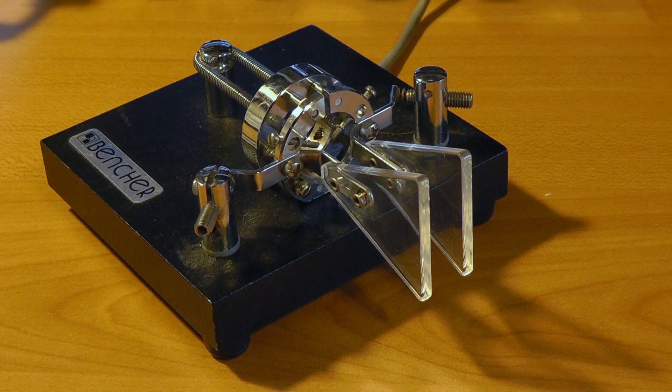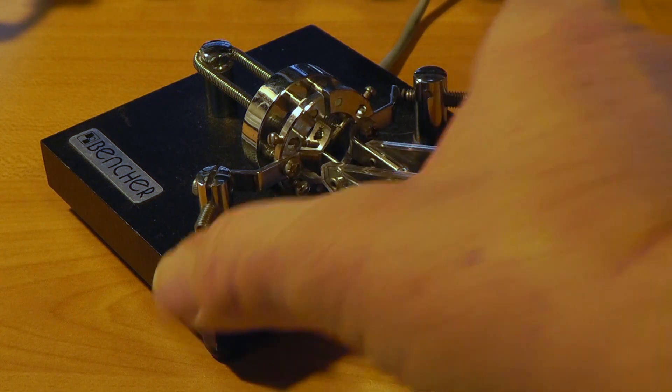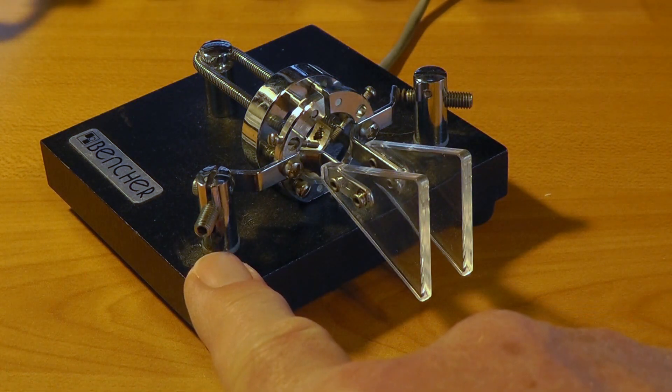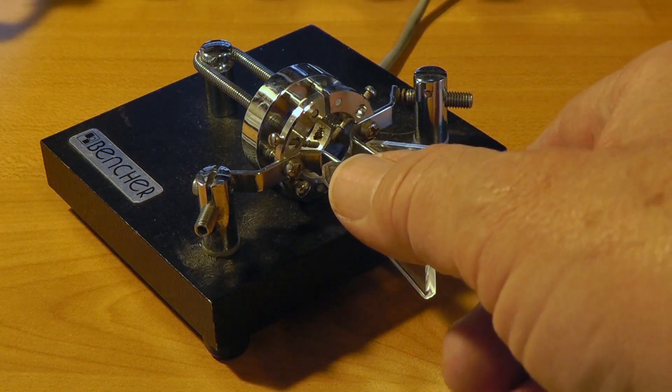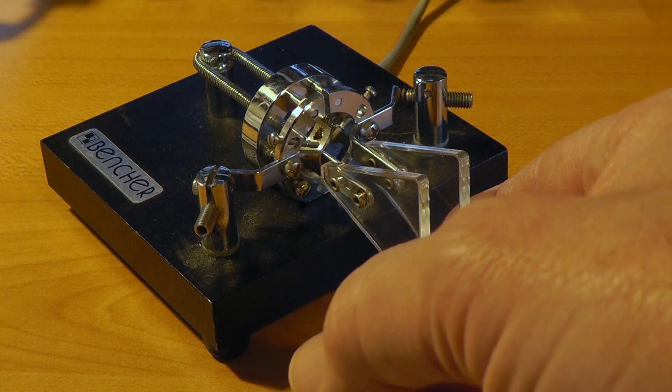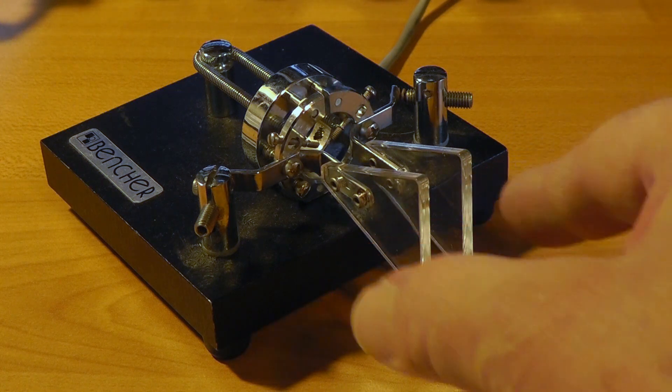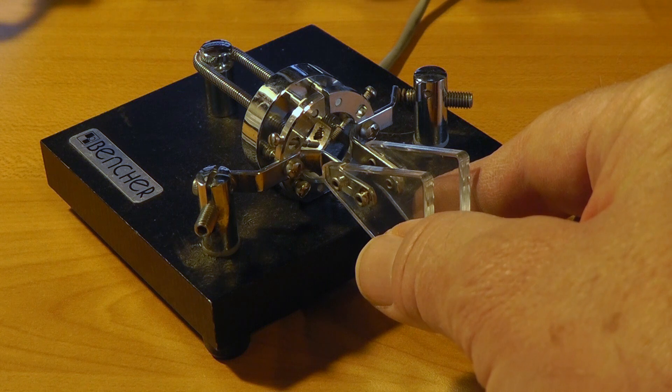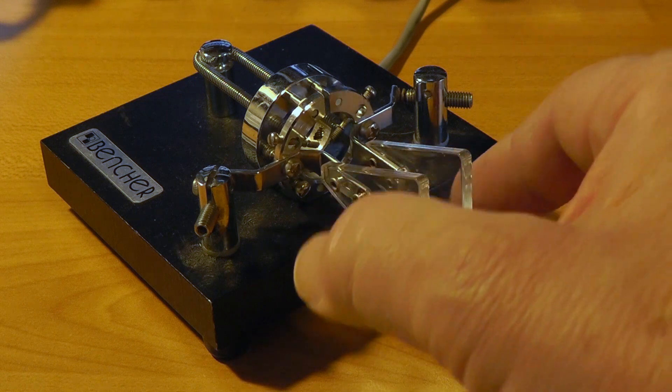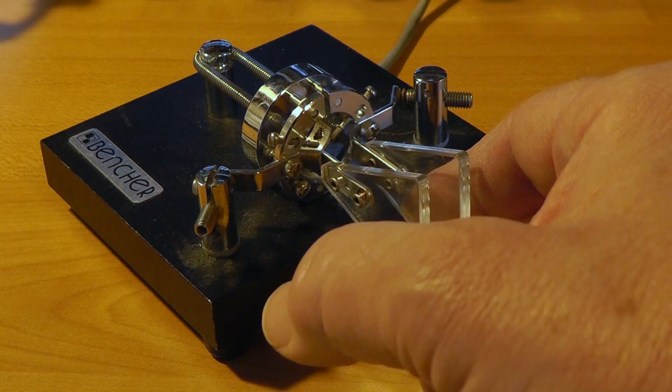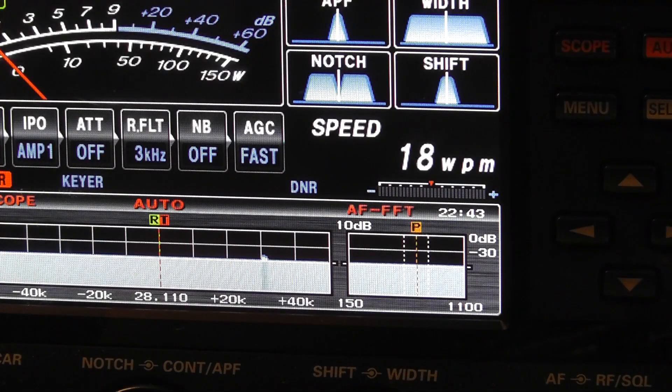Almost all HF radios today have built-in electronic keyers. These are operated by paddles, such as my Bencher BY-1 shown here. It's all fully automatic. Press the paddle to the right and you get dots. Press the paddle to the left and you get dashes. In this particular example, we're dealing with a so-called iambic keyer. If you hold both paddles together, you get alternating dits and dahs. The speed of the code is set by an adjustment in the radio itself.